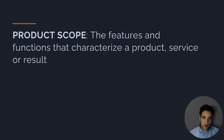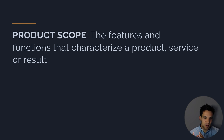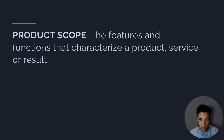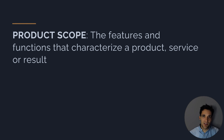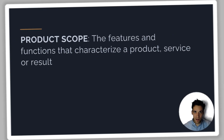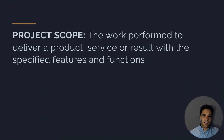Now let's talk about the difference between product scope and project scope. Product scope is the features and functions that characterize a product, service, or result — it's all about the product we're delivering. For example, for a bridge, product scope would be the number of lanes, the type of road surfacing, the type of lighting — all these features that form part of the finished deliverable to the client. Product scope is therefore a subset of project scope.